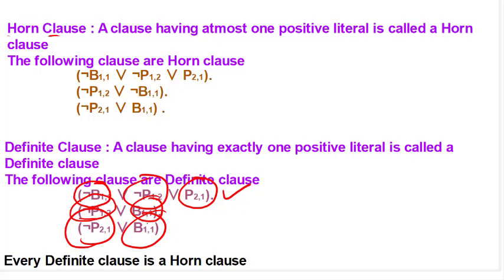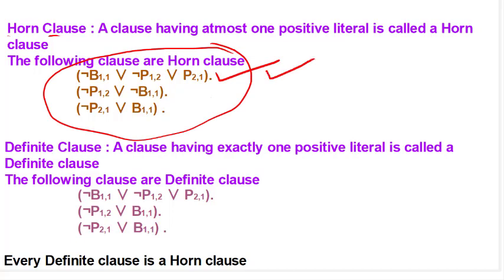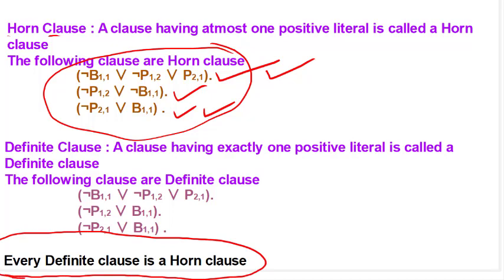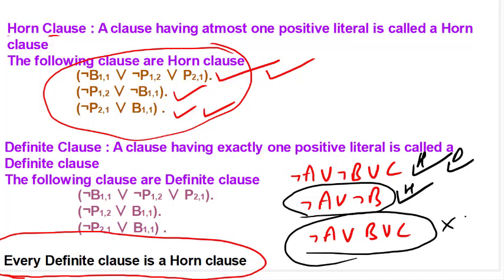In a definite clause there is one positive literal; if all are negative it is not a definite clause. So a clause that is negative, negative, and one positive is both a horn clause and a definite clause. Every definite clause is a horn clause. A clause with only negative literals is only a horn clause. A clause with two positive literals is neither horn nor definite.